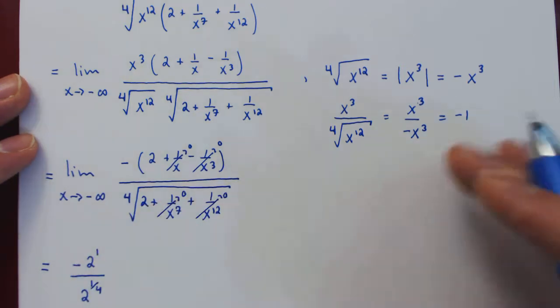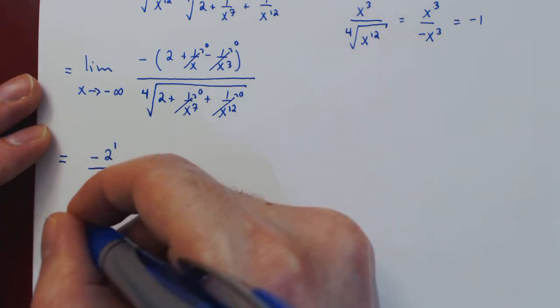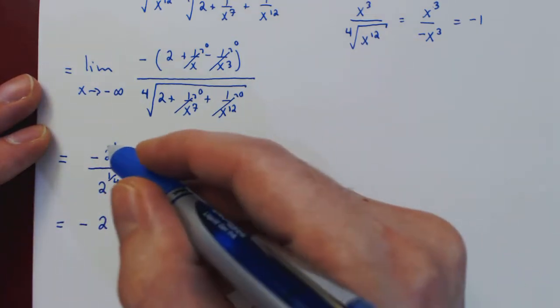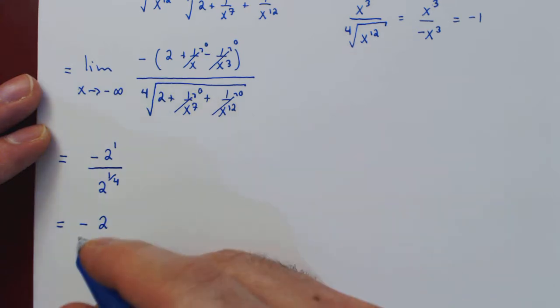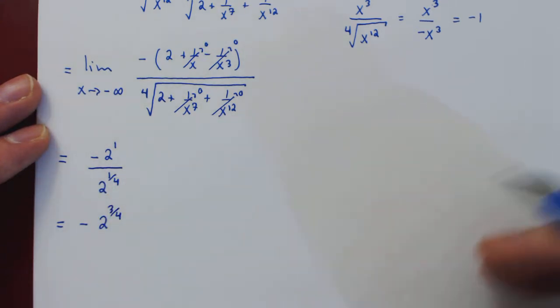And 2 is 2 to the 1. We can simplify into a single power of 2. 1 minus 1/4 is 3/4, so this is negative 2 to the 3/4. And this is our final answer.